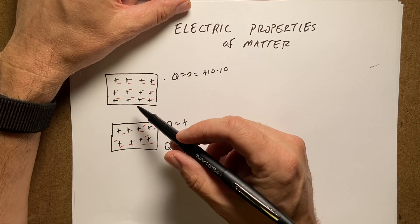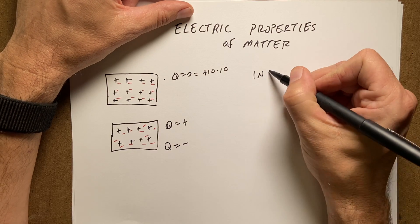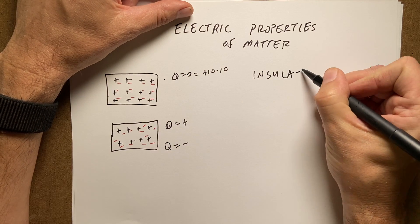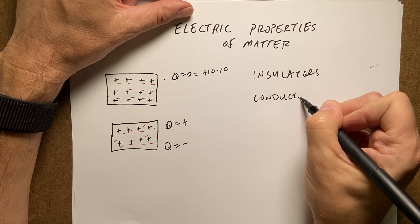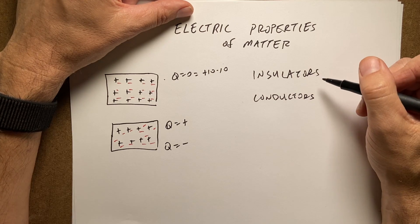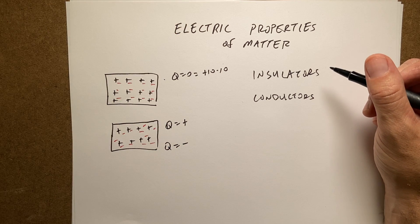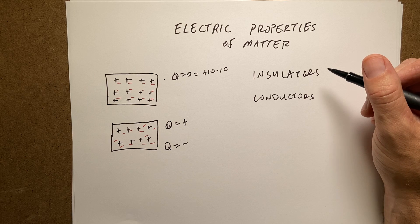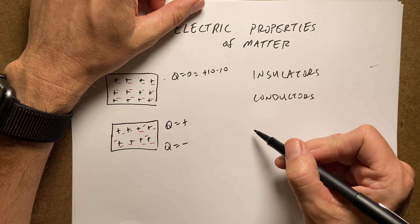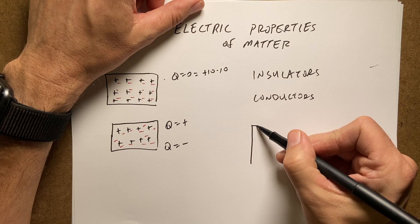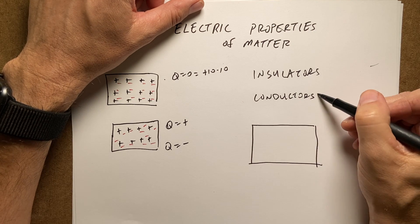Now an important point about insulators versus conductors. In an insulator, electric charges really can't move around in the material. But in a conductor, electric charges are free to move. And this has one very important property. If I take a block of metal that's a conductor, this would be things like metals.